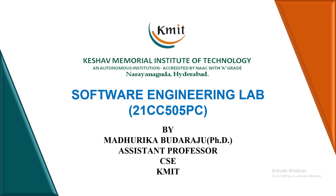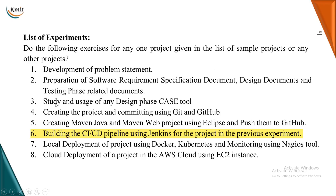Hello students, welcome back to the next session of software engineering. In today's session we shall be talking about experiment number six in our lab, which is building the CI/CD pipeline using Jenkins. In the previous experiment we created a Maven Java project and Maven web project using Eclipse and pushed both those projects into GitHub. In this experiment we will be creating three pipelines in Jenkins, starting with a CI/CD pipeline for the Maven Java project which is in our GitHub.